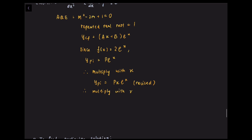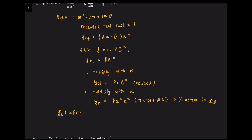Multiplying the proposed particular integral by x gives a revised particular integral of px·eˣ. This function also appears in the complementary function, so we multiply the revised particular integral by x again. This gives the particular integral px²·eˣ. Note that this function does not appear in the complementary function anymore. Thus, the particular integral is given by px²·eˣ.